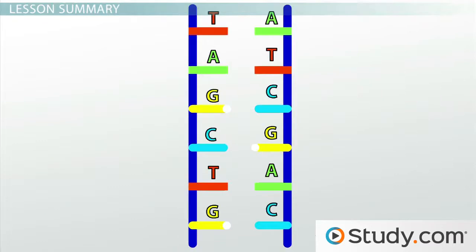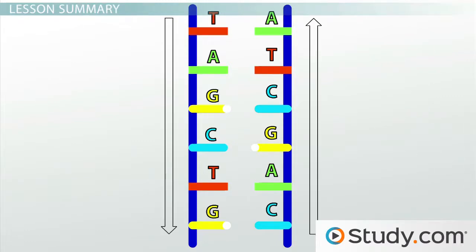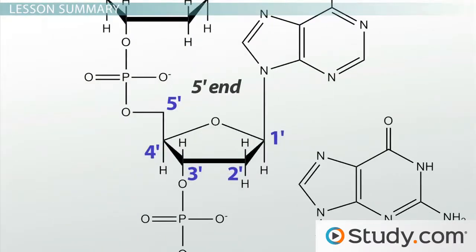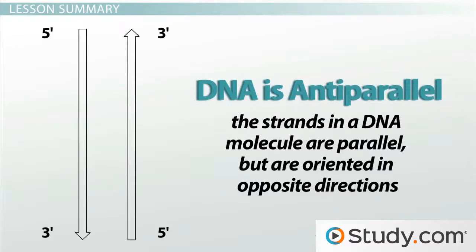Because of the alternating nature of the phosphate groups and sugars in the backbone of nucleic acids, a nucleic acid strand has directionality. The end of a nucleic acid where the phosphate group is located is called the five prime end. The end of the nucleic acid where the sugar is located is called the three prime end. Finally, DNA strands are anti-parallel, meaning that the strands in a DNA molecule are parallel, but are oriented in opposite directions. Essentially, the five prime end of one strand pairs with the three prime end of the other strand.